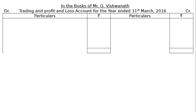There are no major adjustments and we can start with the trading and profit and loss account. In the books of Mr. G. Viswanath: trading and profit and loss account for the year ended 31st March 2016. After drawing the format, we have to start with the credit side, which is easier.